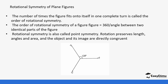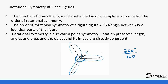For example, consider a figure where the angle between two identical parts is 120°. The order of rotational symmetry = 360° ÷ 120° = 3. This means the figure can fit onto itself three times in one complete turn. We just pick the angle between any two identical parts and divide 360° by it to find the order.